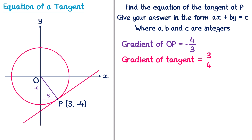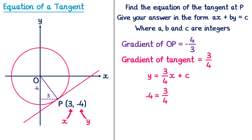Then we write out the general equation of a line, Y equals MX plus C, but replace M with our gradient, 3 quarters. Then we turn our attention to the point P, which has X coordinate 3 and Y coordinate negative 4, and we substitute these into our equation. So we replace the X with 3 and Y with negative 4: negative 4 equals 3 quarters of 3 plus C. So we've got negative 4 equals — we multiply 3 by 3, which is 9 — so 9 over 4 plus C.